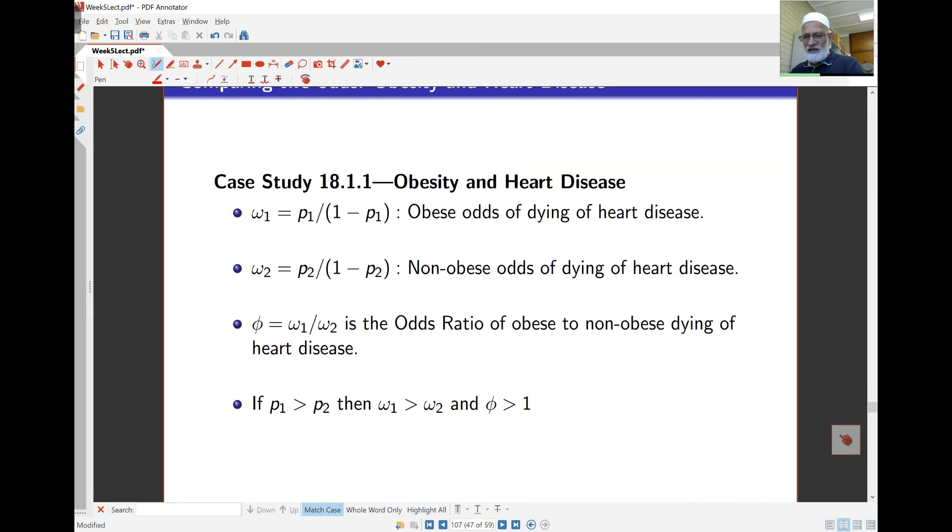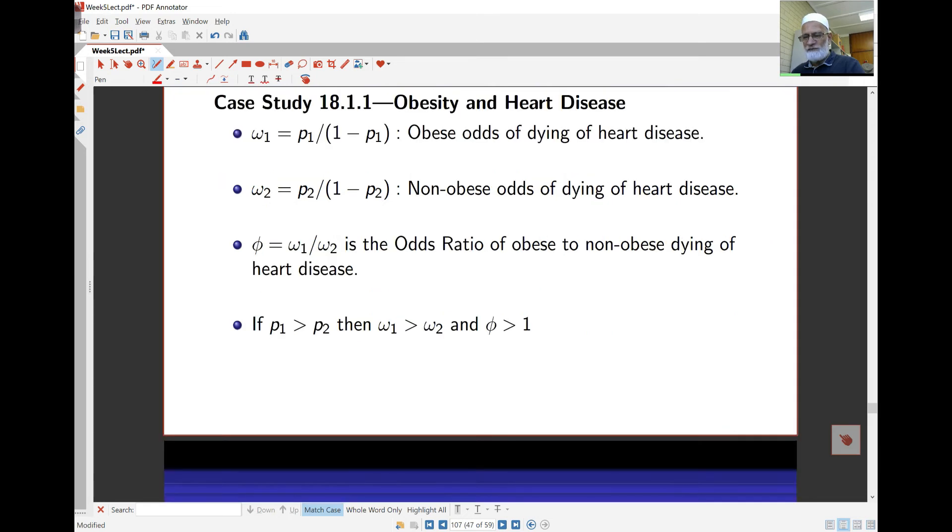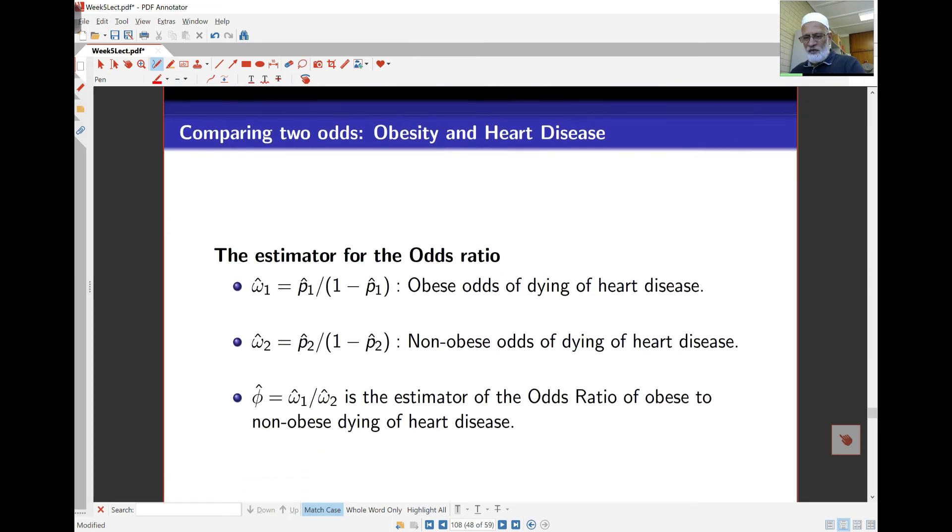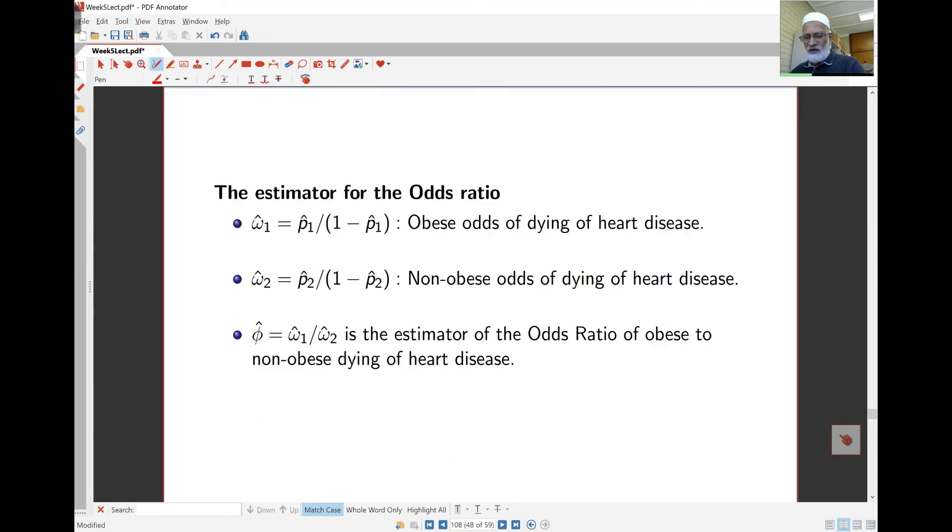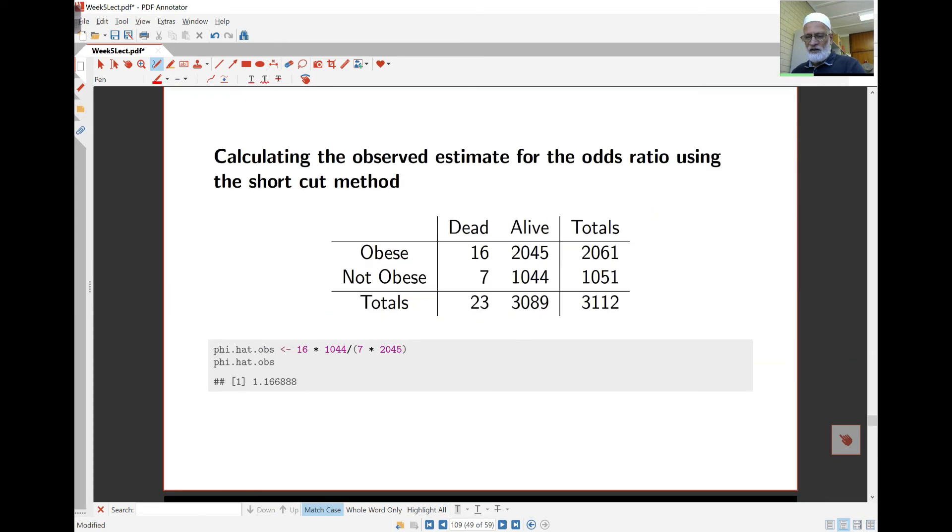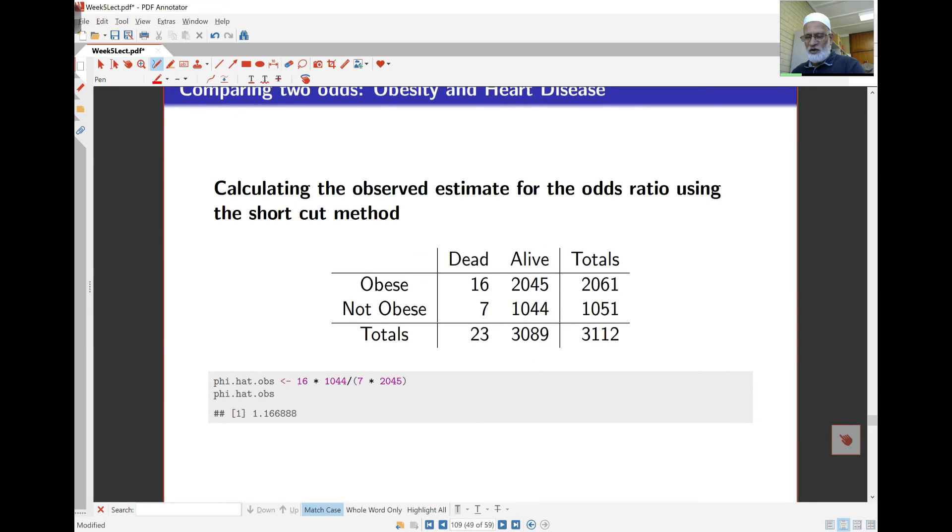So coming back to the Samoan study in this case here, we can find the probabilities, the odds of dying of heart disease when you're obese and not obese, and we can take a look at the ratio as well. We know that if p1 is bigger than p2, then the odds ratio for omega 1 is bigger than that for omega 2. So we expect the ratio to be bigger than 1 as well. We can look at the calculations and this is not so difficult. We know the odds ratio here was 1.166 as we saw earlier.